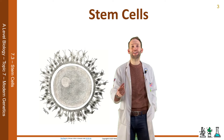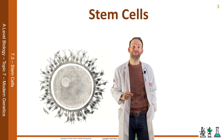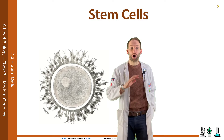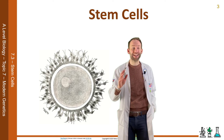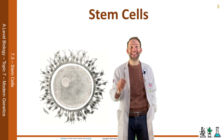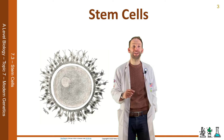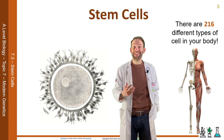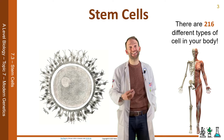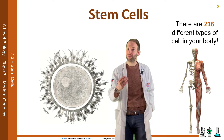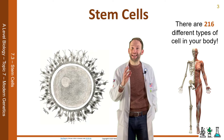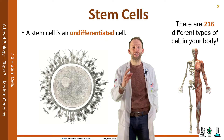We all started life as one cell — a zygote. This cell is the ultimate stem cell as it has the potential to form any of the different types of cell in the human body. There are actually 216 different types of cells in the human body, and a stem cell is an undifferentiated cell — it hasn't got a job yet.